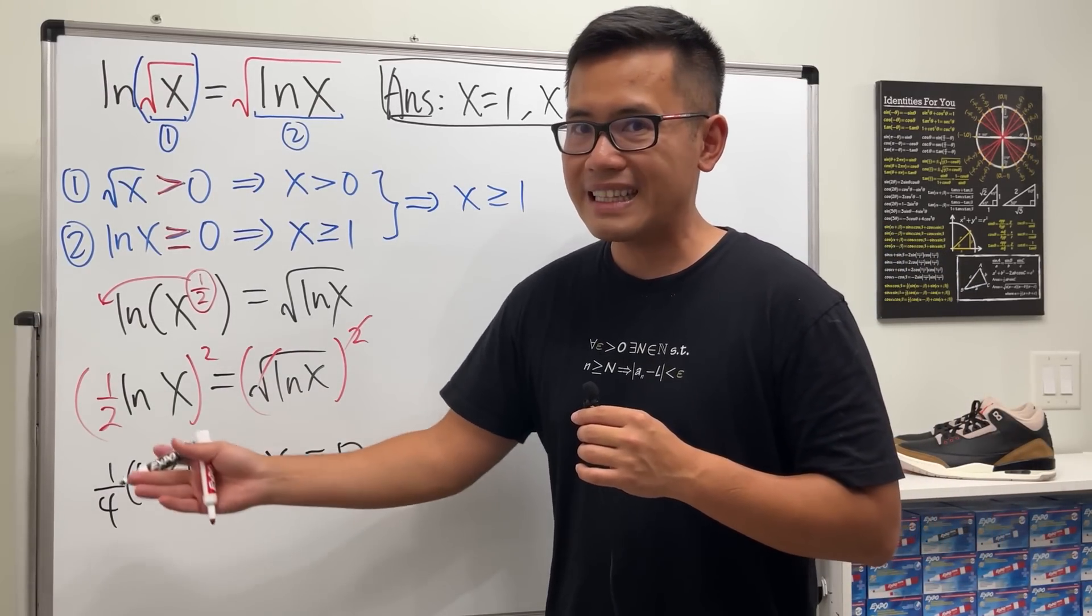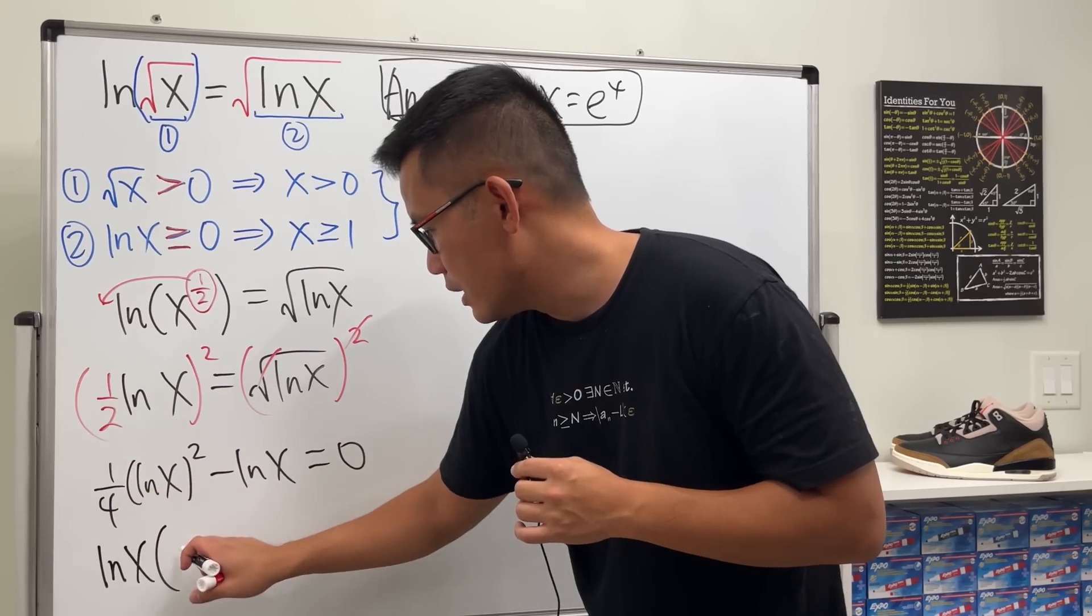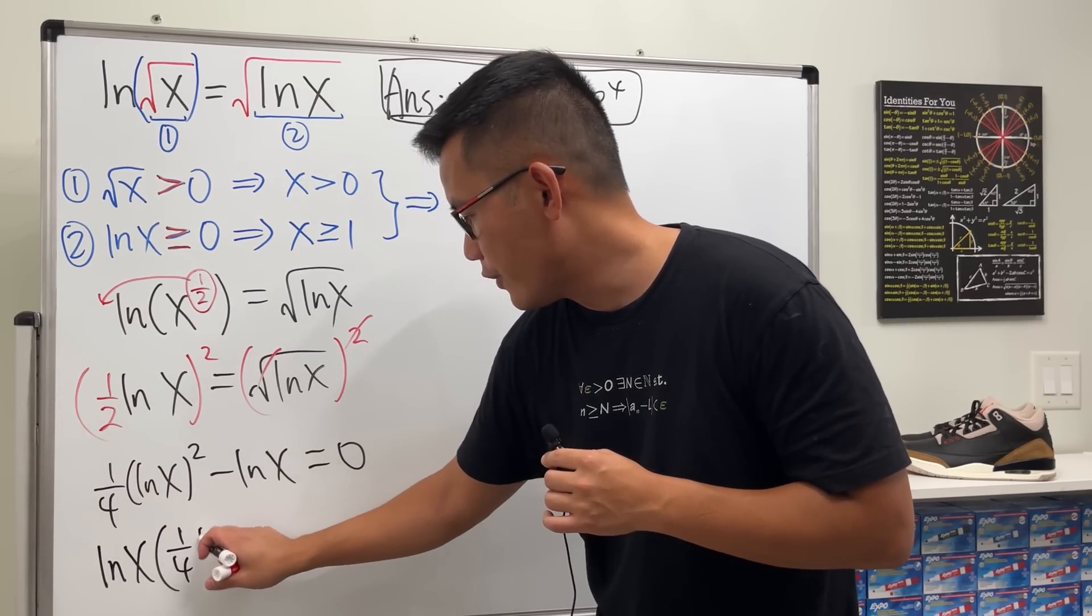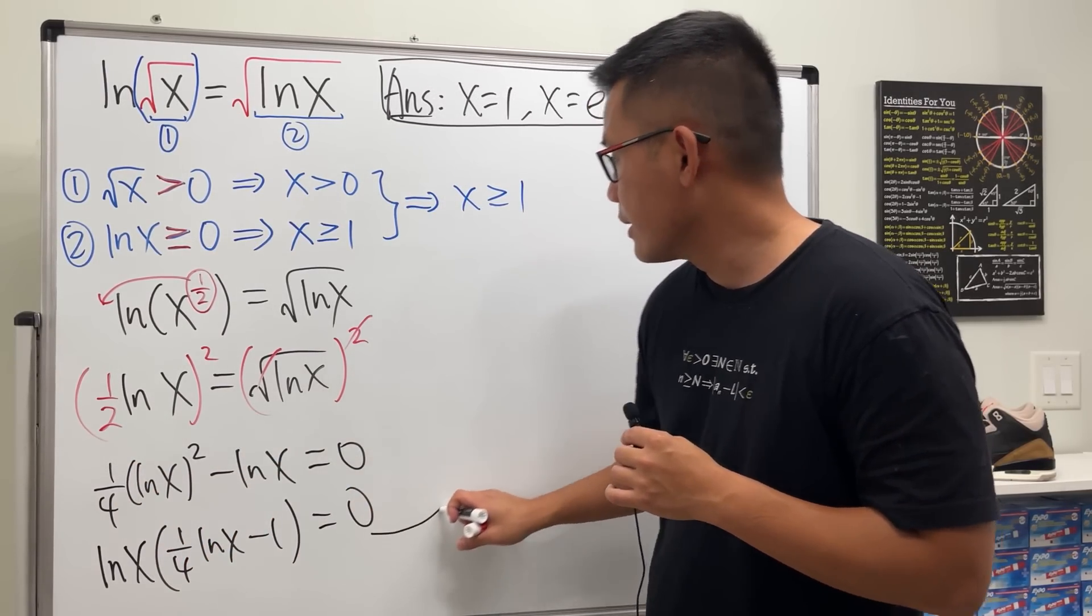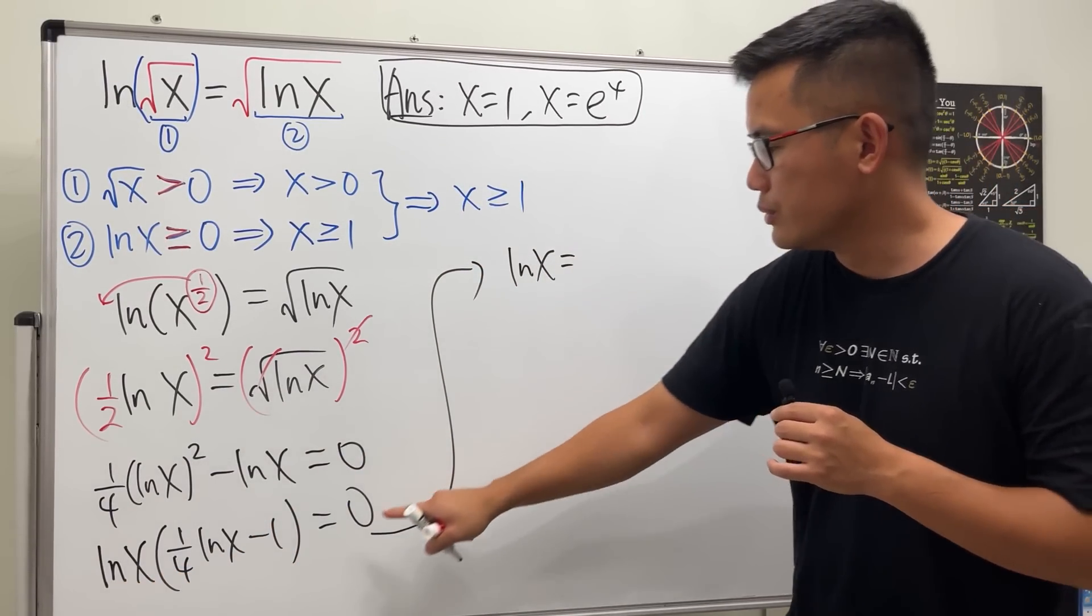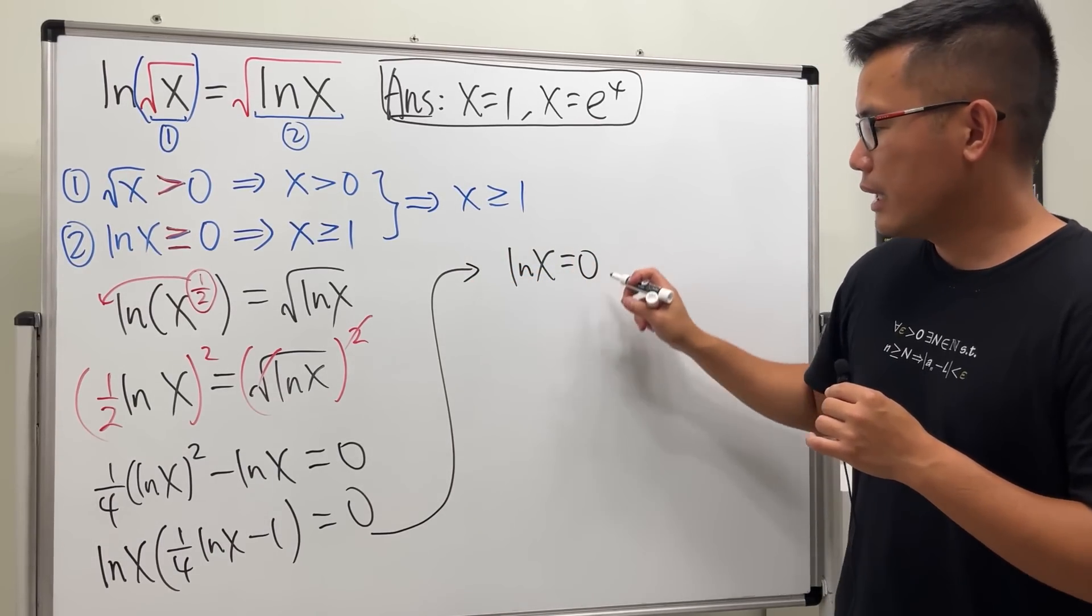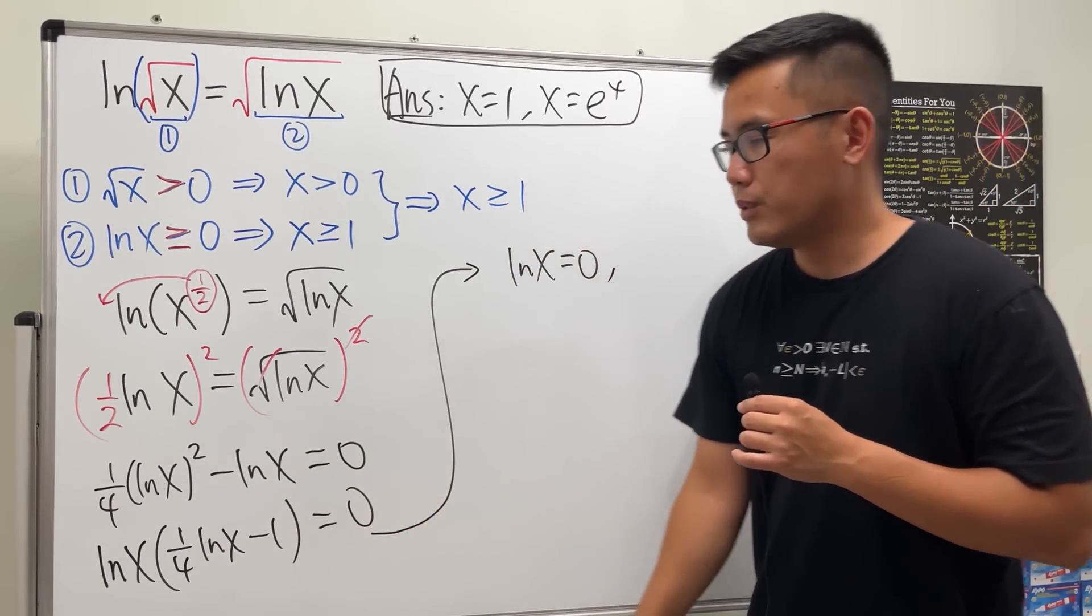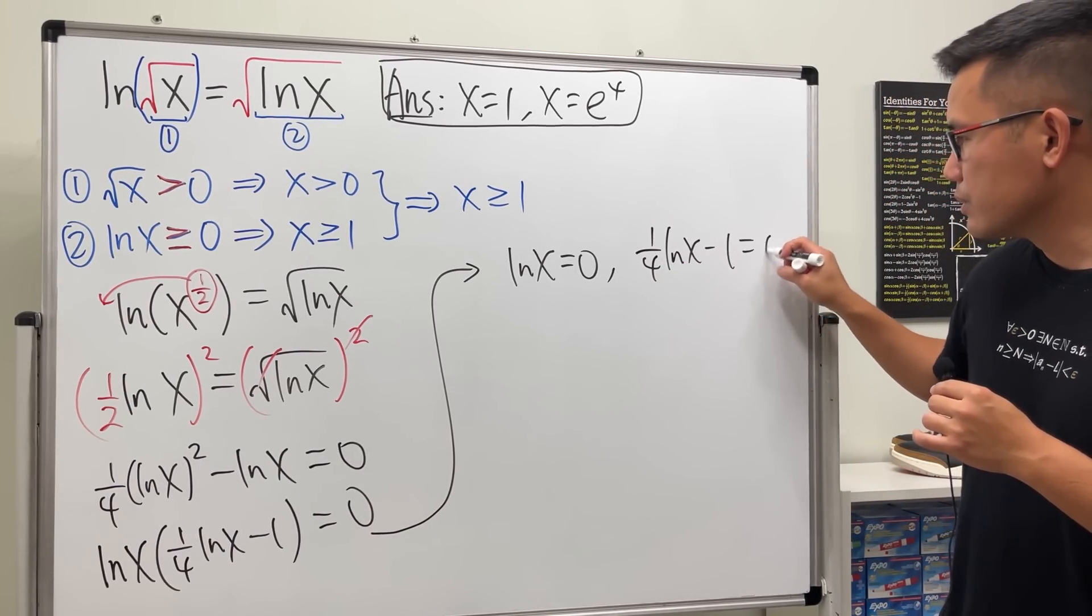From here, we can factor out an ln x. So ln x times, the first one will give us 1 over 4 ln x, and then minus 1, and that's equal to 0. So from here, we know that ln x has to be equal to 0 because of the 0 product property, and then this part has to be equal to 0, so 1 over 4 ln x minus 1 is equal to 0.